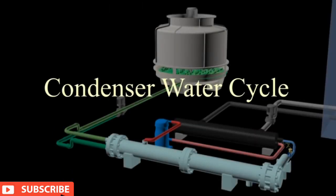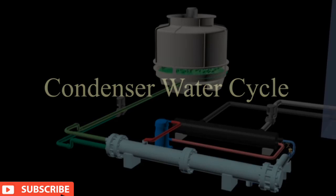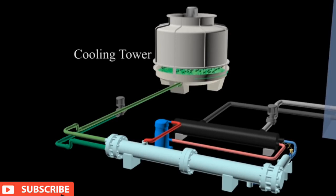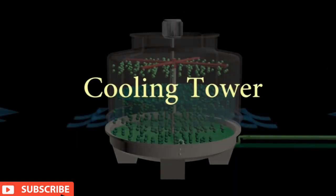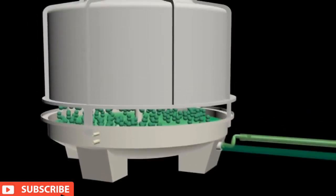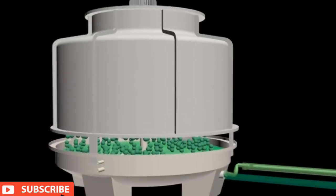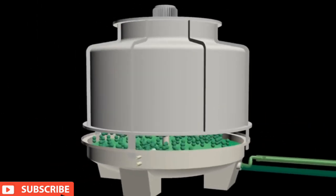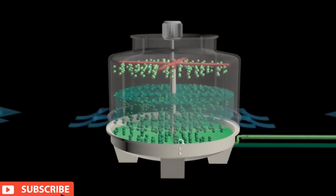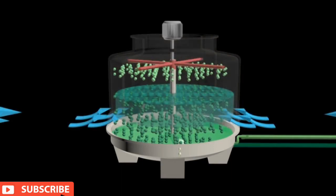Condenser water cycle. The condenser water cycle consists of two basic components: cooling tower and water pump. The cooling tower serves to cool down the temperature of condenser water that will be used to absorb heat from the refrigerant at the condenser.